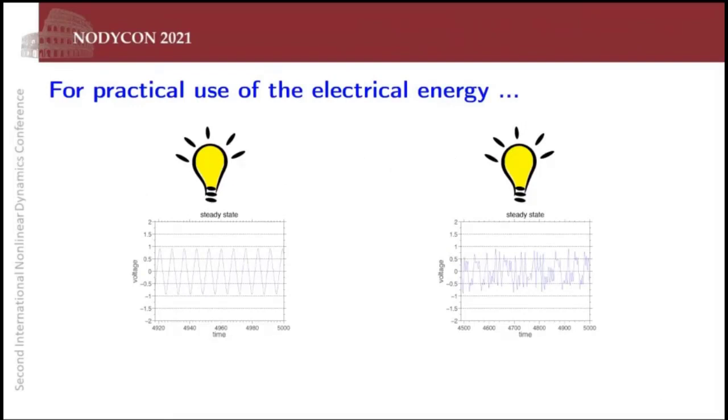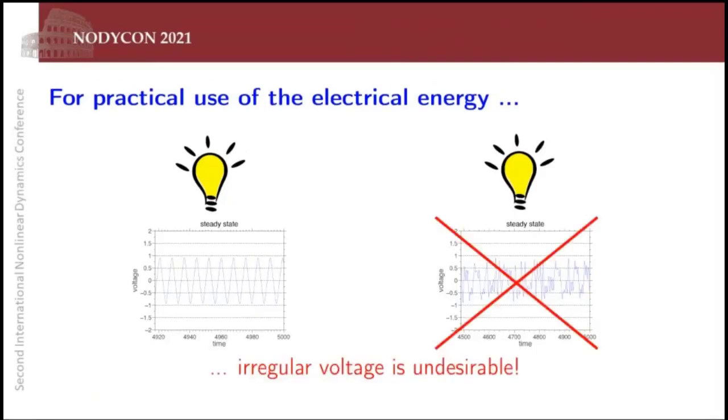But before we proceed, I need to make a practical consideration. You have two typical responses of this system here. One that is regular, you have a harmonic response, and another one which is irregular, an aperiodic response here in this voltage. So for the purpose of practical application, this second kind of electrical signal is undesirable because you need to expand additional energy to rectify this in order to use in our application. So we're going to concentrate attention on this. And we want to ensure that the optimal configuration we're going to obtain respects this condition here of regular dynamics.